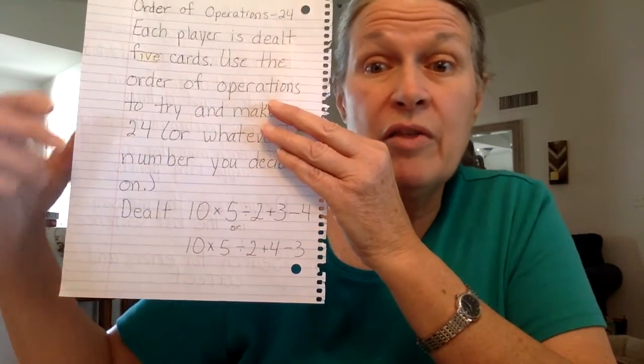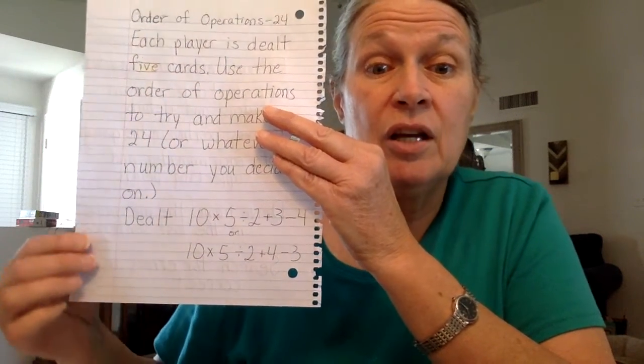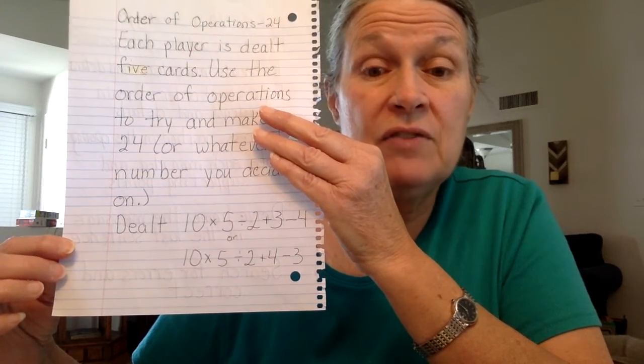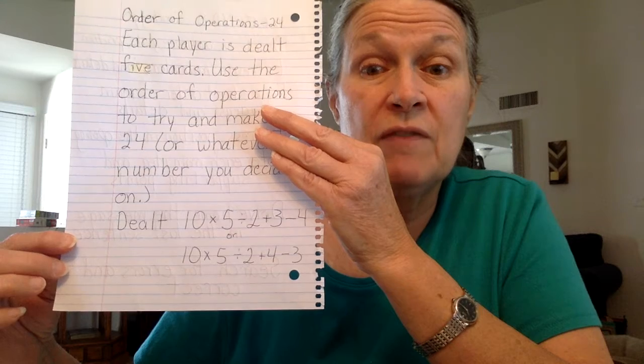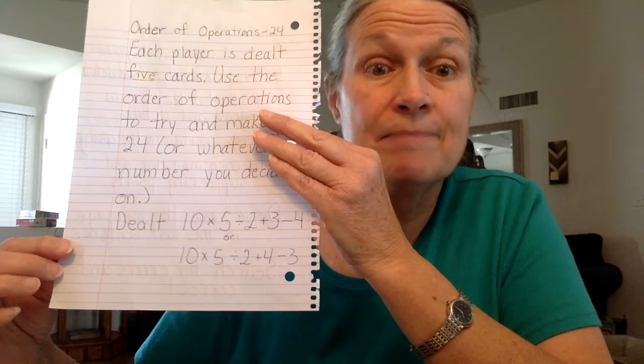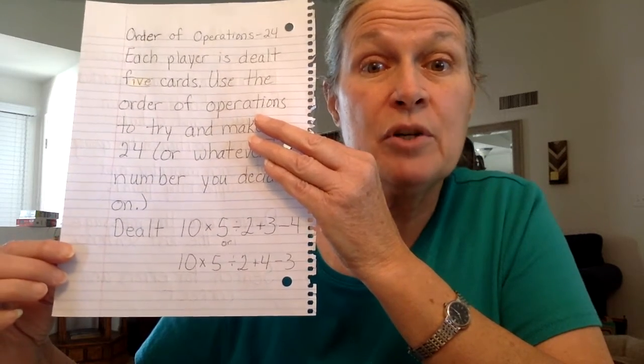Another way to think about it: multiply 5 times 10 to get 50, divide by 2 to get 25, add 4 to get 29, subtract 3 to get 26. It depends on what number you're trying to find.